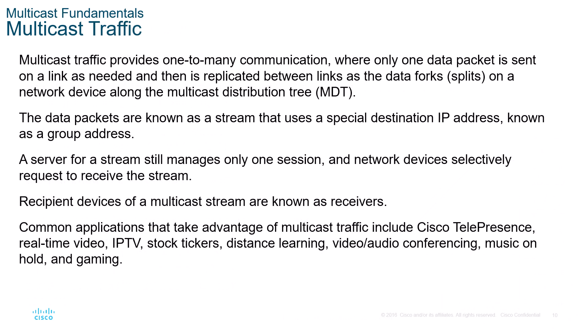Multicast provides one-to-many communication where only devices that need it receive it. Only one data packet is sent on a link as necessary, then replicated between links as the data forks or splits — along the multicast distribution tree (MTD). Data packets are known as a stream using a specific destination IP address called the group address. A server manages only one session, but network devices selectively request to receive the stream. Recipient devices of a multicast stream are known as receivers.